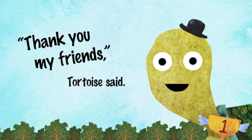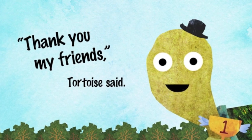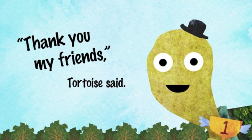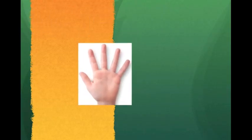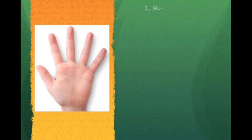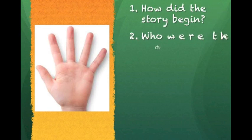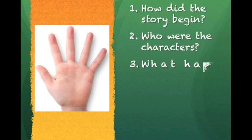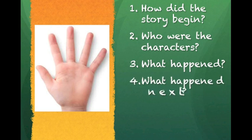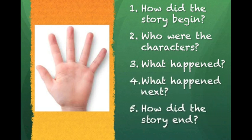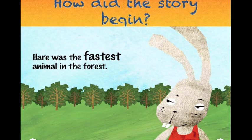Now that we've finished reviewing the story, let's go back and think about the five strategies that we would use to retell the story: how did the story begin, who were the characters, what happened, what happened next, and how did the story end?